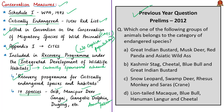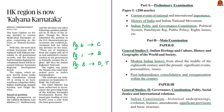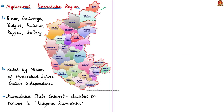The next news article talks about a region in the state of Karnataka called Hyderabad Karnataka, consisting of six districts: Bidar, Gulbarga, Yadgiri, Raichur, Koppal, and Bellari. This region was ruled by the Nizam of Hyderabad before Indian independence, which is the reason for its name. The news is that the state cabinet of Karnataka has decided to rename this region as Kalyana Karnataka.